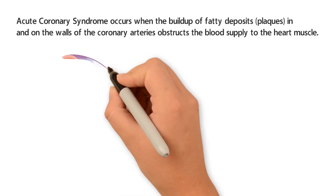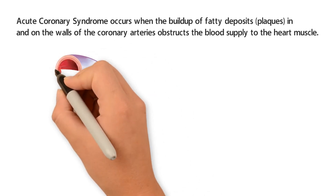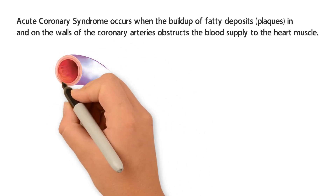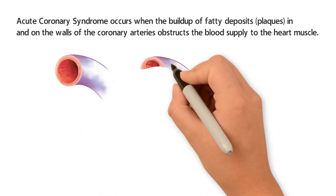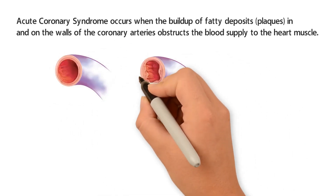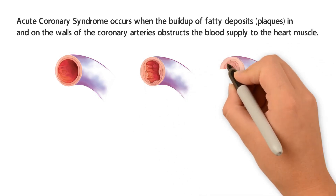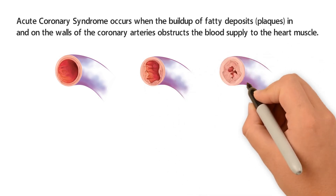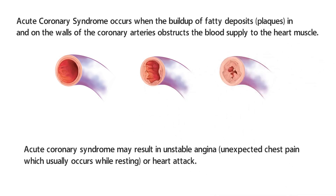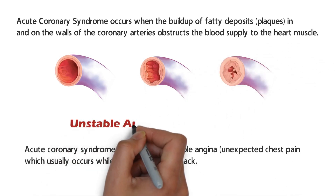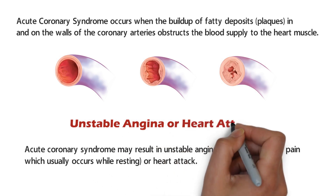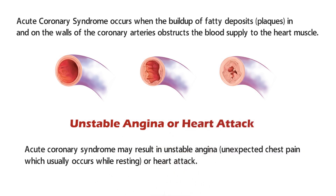Acute coronary syndrome occurs when the buildup of fatty deposits in and on the walls of the coronary arteries obstruct the blood supply to the heart muscle. Acute coronary syndrome may result in unstable angina or heart attack.